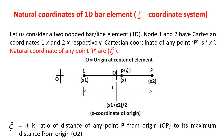The ξη coordinate system is similar to the XY coordinate system. Horizontal X in the Cartesian coordinate is nothing but horizontal ξ in the natural coordinate system. Similarly, vertical Y in the XY coordinate system is replaced by vertical η in the natural coordinate system. That is why it is called the ξη coordinate system.